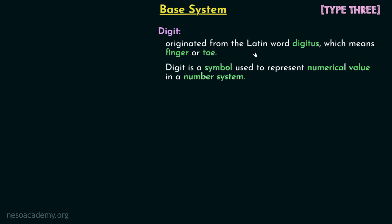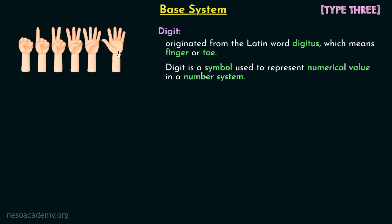We will now understand how the Latin word 'digitus' is related to today's digit. We have to go back to ancient times when fingers were used to do calculations. The fingers — or 'digitus' — were used for calculations, and therefore the symbols we use today in place of fingers are known as digits.